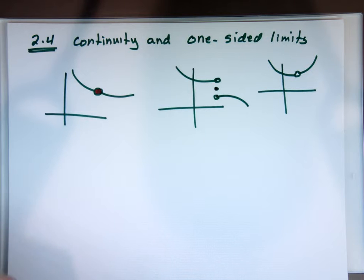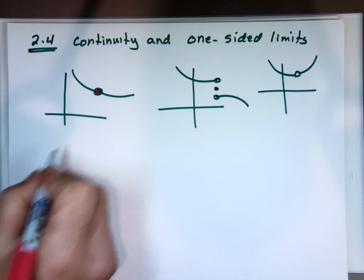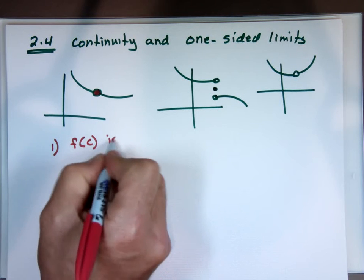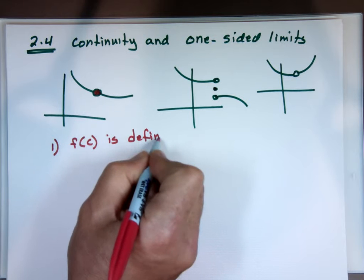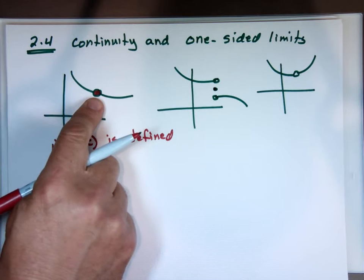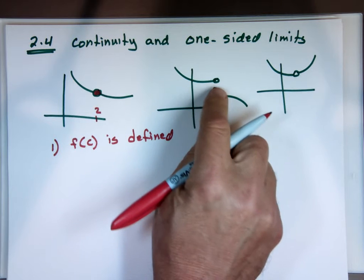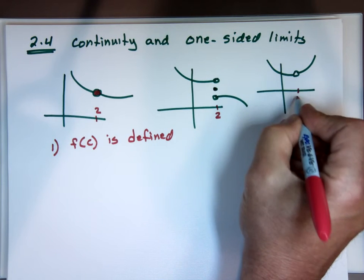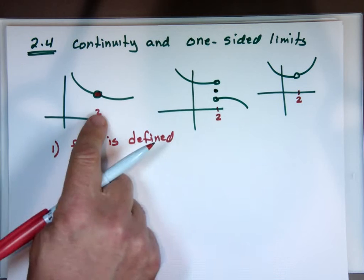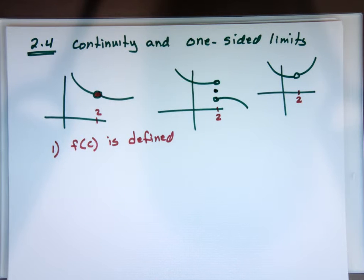So how do you know if the function is continuous? There are three things you have to look for at the point you're testing. Step number one: the function must be defined at that point. For example, let's say this value is 2. Is the function defined at 2? Yes, you can see a closed circle. Is this function defined at 2 here? No. So this one immediately is not continuous. These two are defined, but that doesn't mean they're continuous.